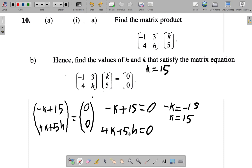Let's look at this now. This other equation here. 4K plus 5H is equal to 0. K is 15. So, 4K, remember, it really means 4 multiplied by K. So, it's really 4 multiplied by 15 plus 5H is equal to 0.